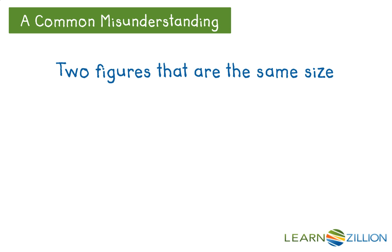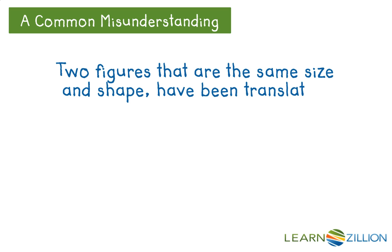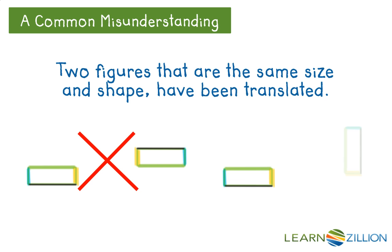However, not all figures having the same size and shape have been translated. In both representations below, the rectangle has not been translated properly. On the left, the blue, yellow, black, and green segments are reversed in some way. On the right, the rectangle has been completely turned.